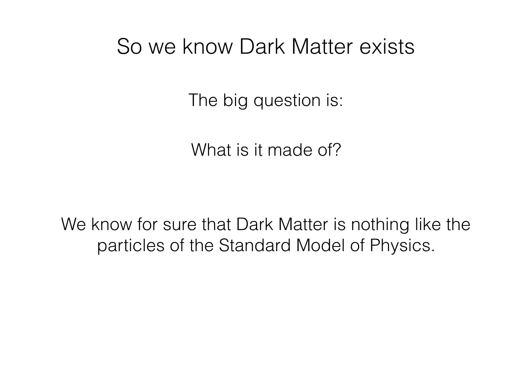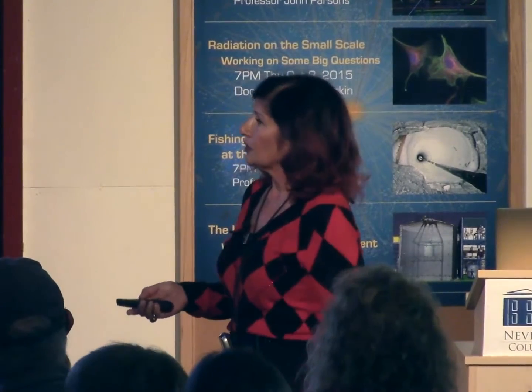So we know dark matter is there — that's the bottom line. We know it's there, and I hope I convinced you that we know it very precisely through its gravitational effects, which are responsible for us even being here. But the question that remains, and our challenge, is: what is it made of? We know for sure that dark matter is nothing like the particles of the standard model of physics. Going through that table one by one, there is not one particle in the standard model which can fit the bill for being the dark matter. We know very precisely also the amount of normal matter that we have in the universe. So it's nothing like a standard model particle.